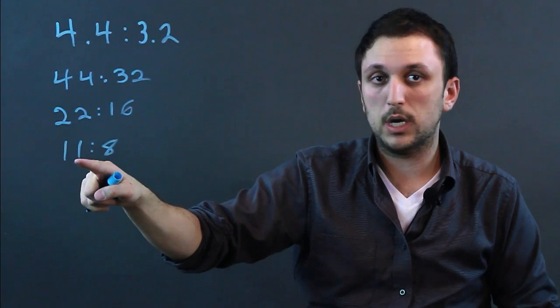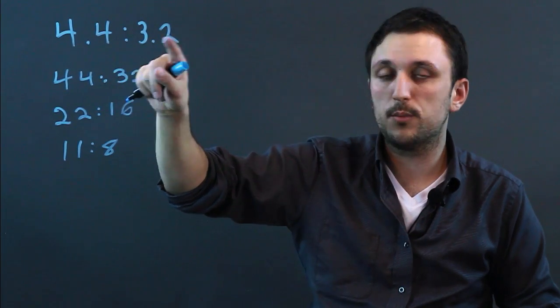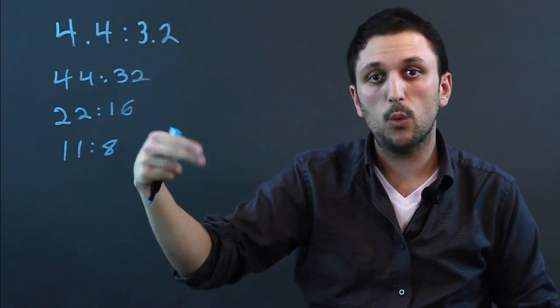And that, because we have a prime number, we know we have an indivisible ratio. So the ratio of 4.4 to 3.2 is actually 11 to 8 when you multiply by 10.